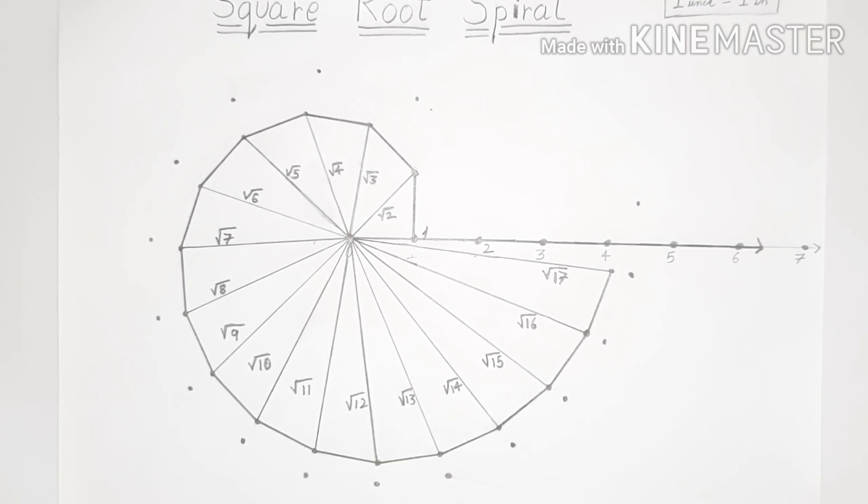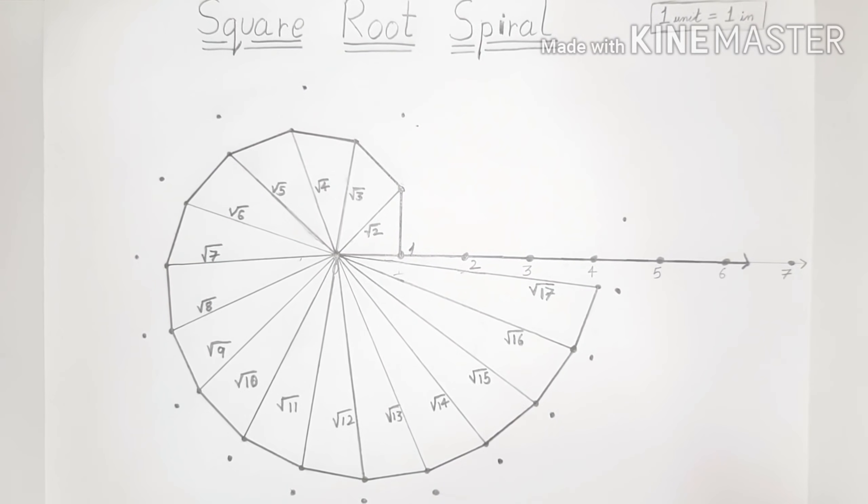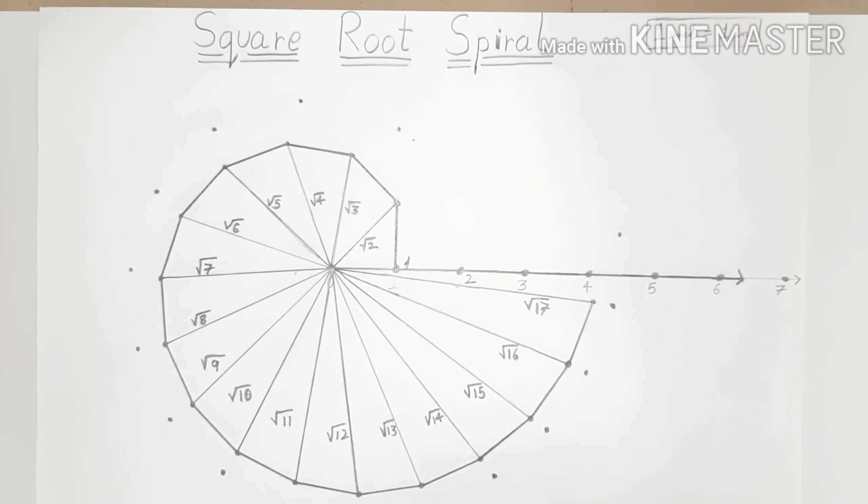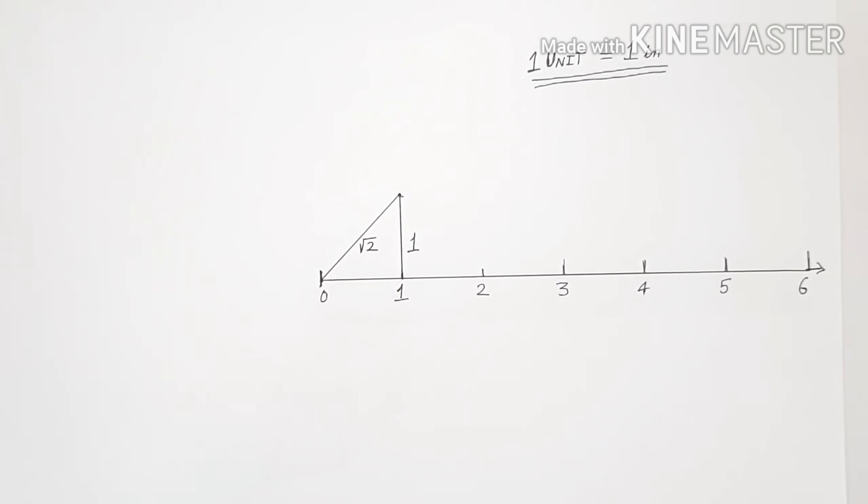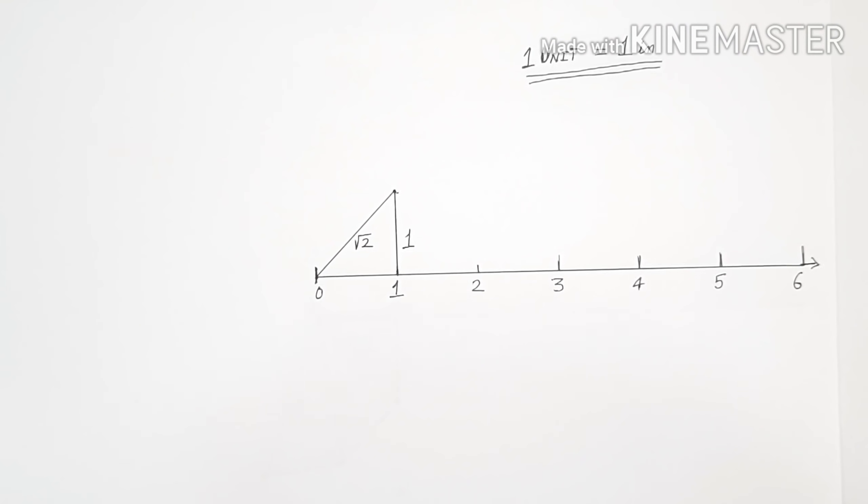Hey friends, what's up, methamagician over here. Today I'm going to teach you how to create this awesome cool looking square root spiral. So let's begin. To begin with, we'll draw a number line as shown. After that, we'll take one unit above one, that means perpendicular to it.